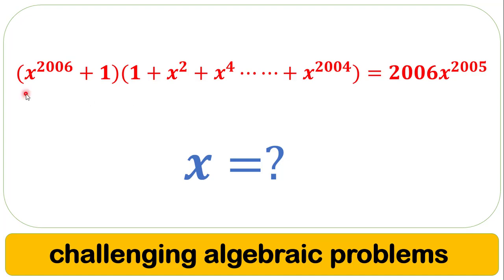Hi everyone, welcome back to Math Academy. In this video we are given: (x^2006 + 1) times (1 + x^2 + x^4 + ... + x^2004) equals 2006 times x^2005, and we are going to find the value of x.